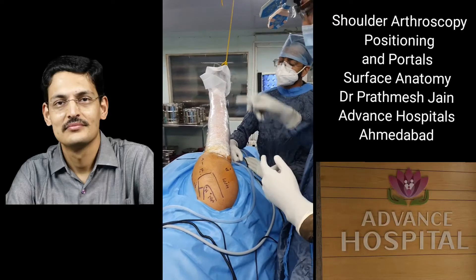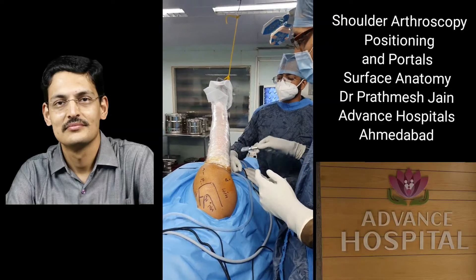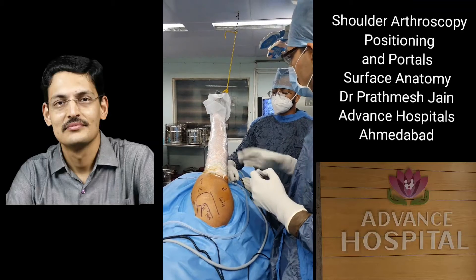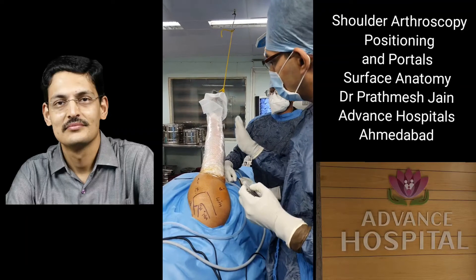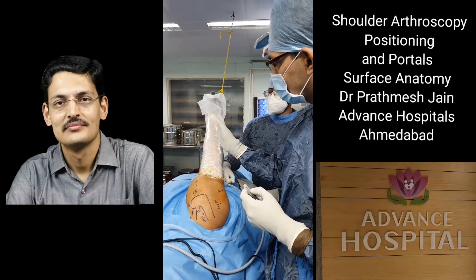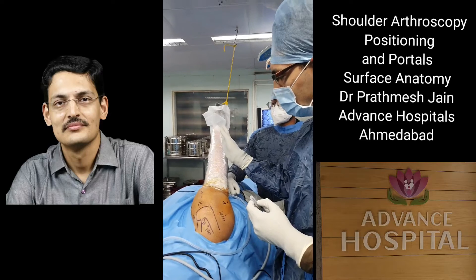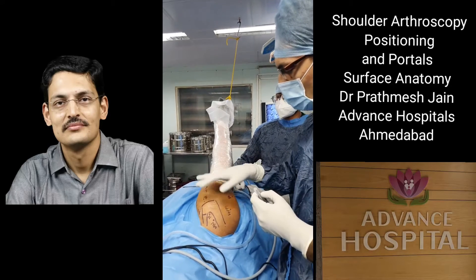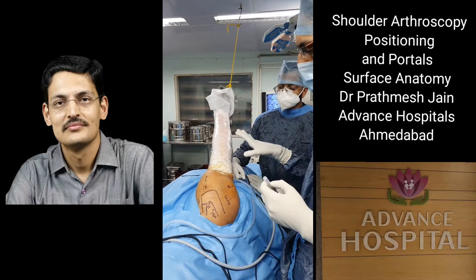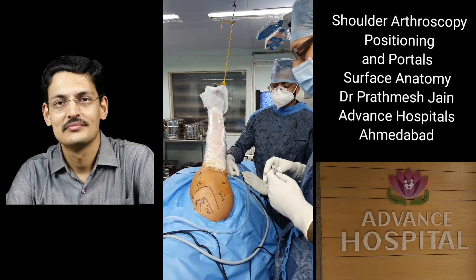We do this in the lateral position. The angle of the arm with the body should be around 30 degrees, slightly angled anteriorly. This usually makes a very good position for doing your subacromial work.